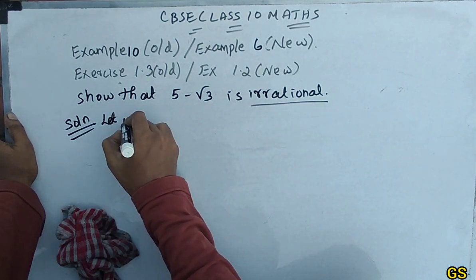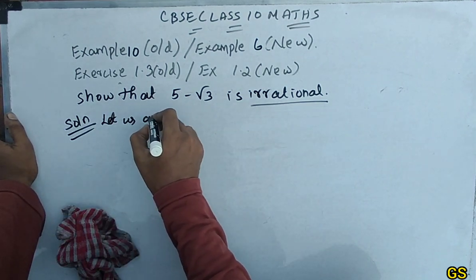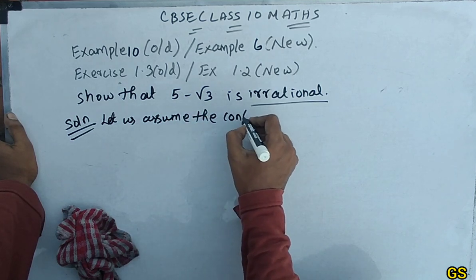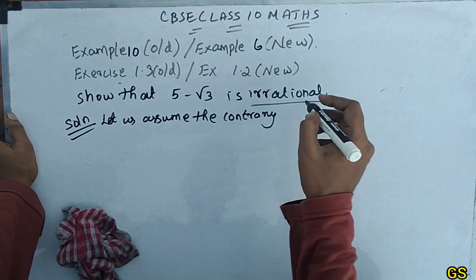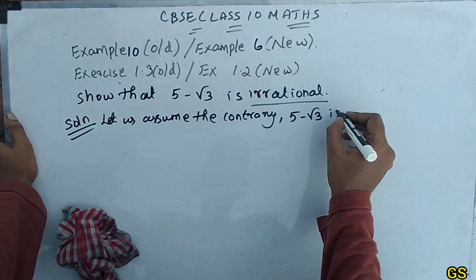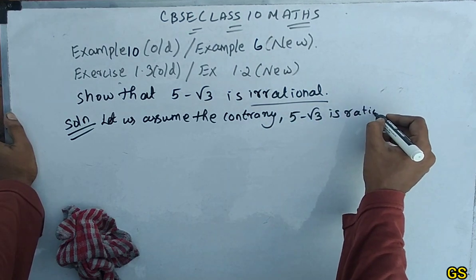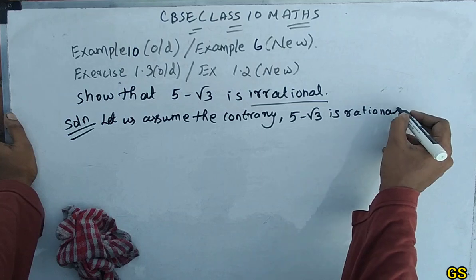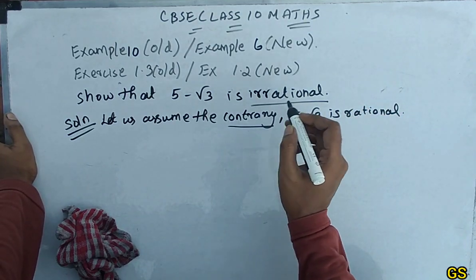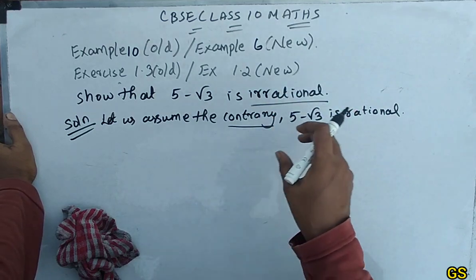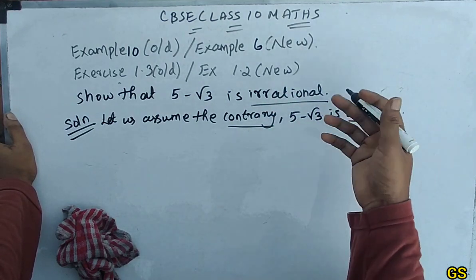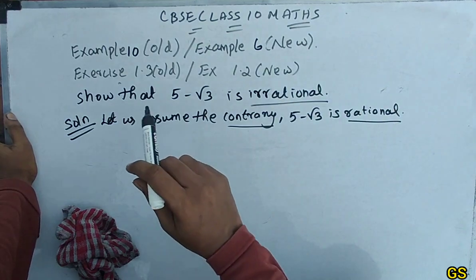Let us assume the contrary — that is, let us assume 5-√3 is rational. Here, contrary means opposite. So if we want to prove it is irrational, we assume it is rational.